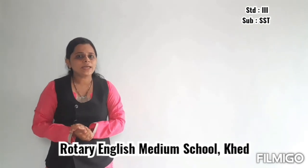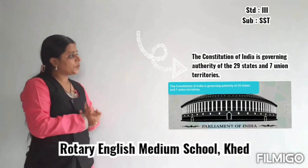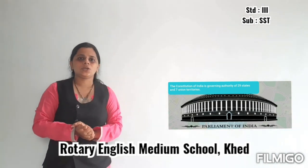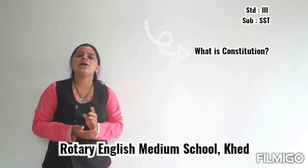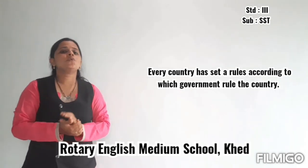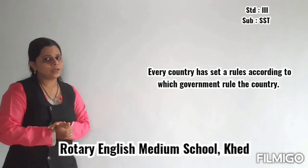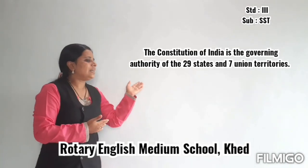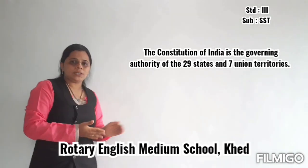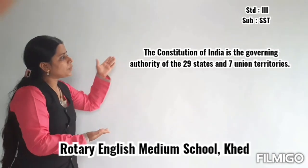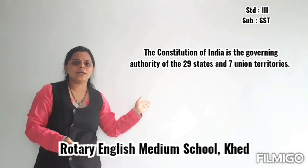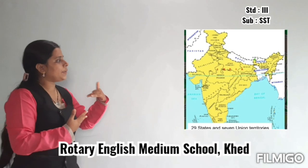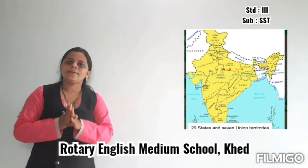The constitution of India is the governing authority. Every country has set rules by which the government rules the country. The constitution of India governs 29 states and 7 union territories.